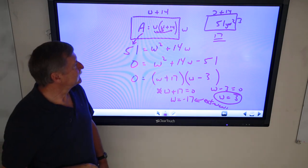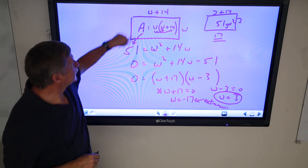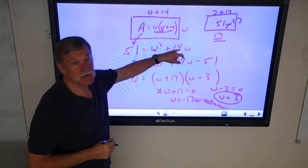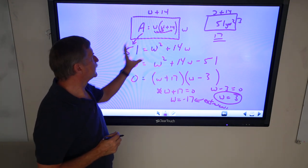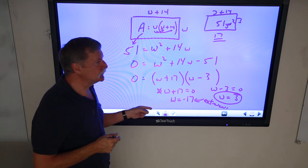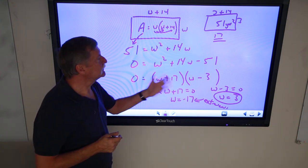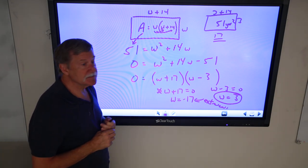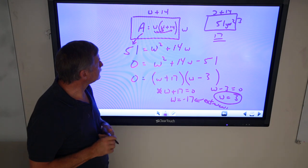Alright, alright, so again, we took the area, which we knew, we took length times width, which gave us a quadratic, put everything over on the side, factored it, set the factors equal to 0, test our answers, and find that a negative answer in this case is extraneous.